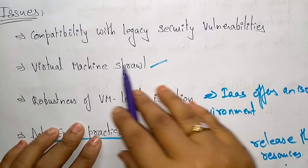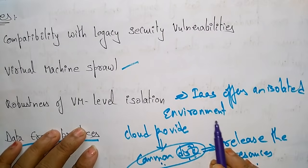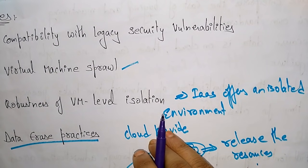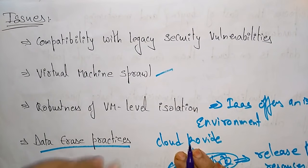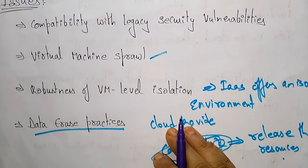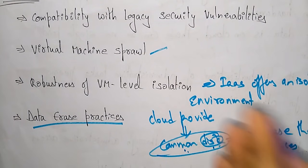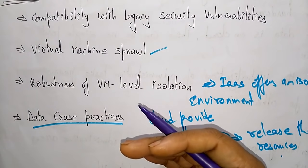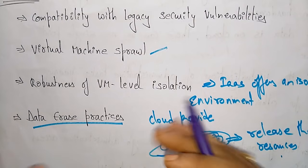The third issue is robust virtual machine isolation: IaaS offers an isolated environment to individual customers through hypervisors. The fourth issue is data erasure practice — whenever a customer releases the resources, the cloud provider must ensure that the next customer to rent those resources does not observe the data of the previous customer. The cloud provider has to ensure the disk is properly and completely data-erased.